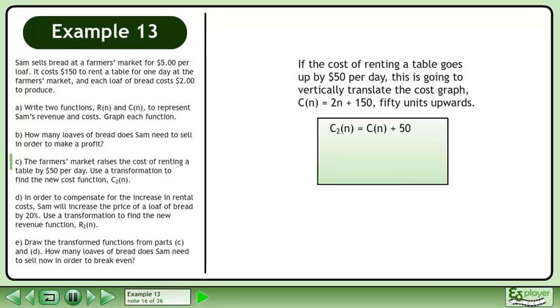The new cost function is the original cost function plus 50. Replace C of n with 2n plus 150. Simplify to get the transformed cost function, C2 equals 2n plus 200.